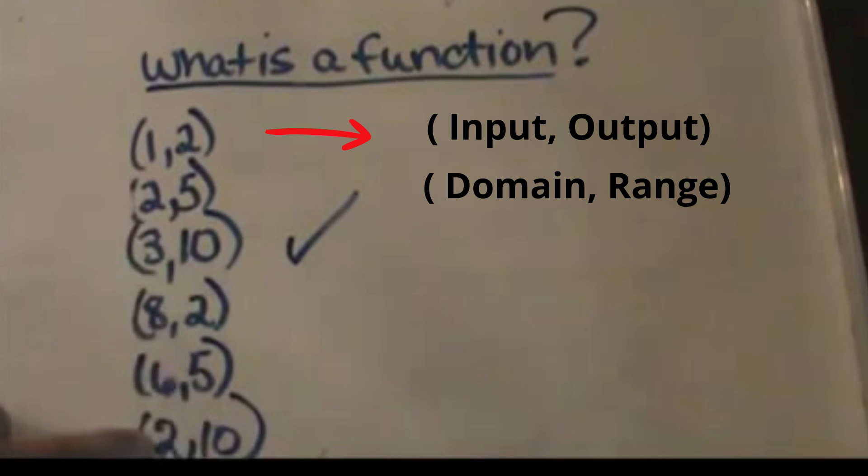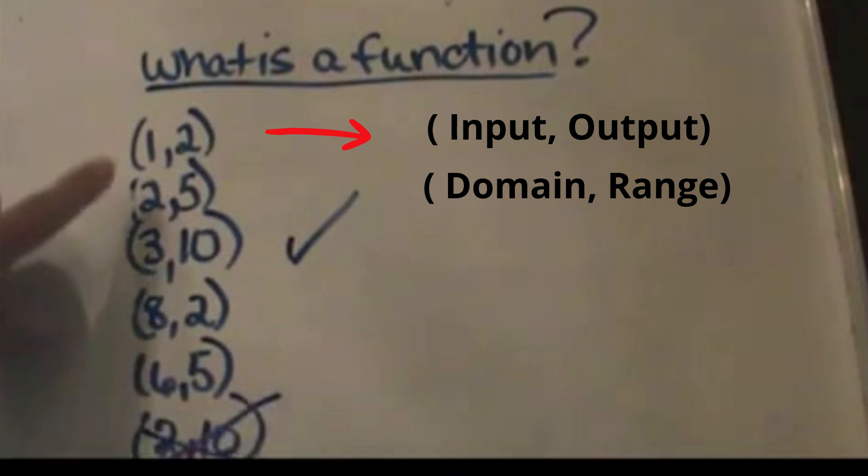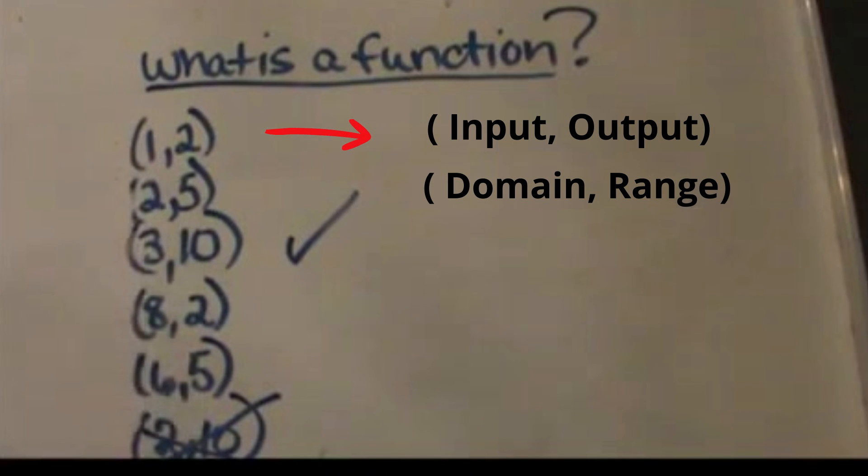I can't push the same button and get two different drinks, so that makes it not a function anymore. You look for repeating x values. If you repeat an x value, you have to have the same repeating y value, and that's how you can decide if you have a function or not given ordered pairs.